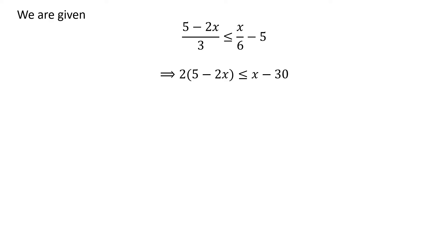Multiplying both sides of an inequality by a positive number does not change the inequality. So let us multiply the above inequality by 6. We are left with 2 times 5 minus 2 times x is less than or equal to x minus 30.